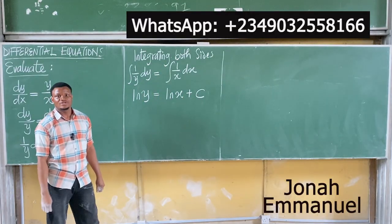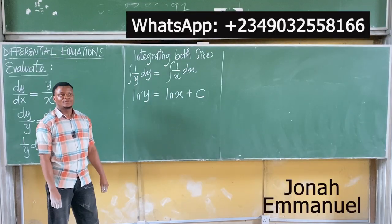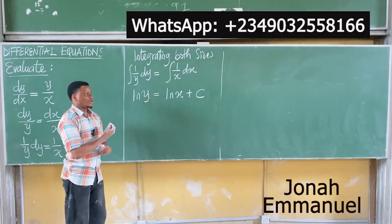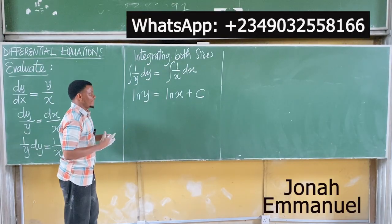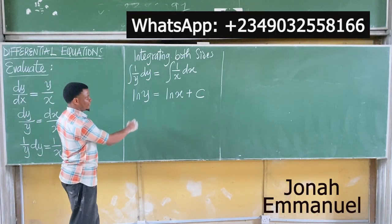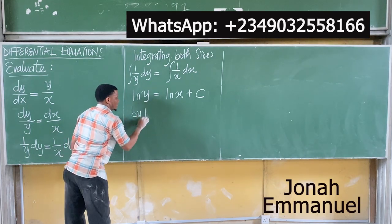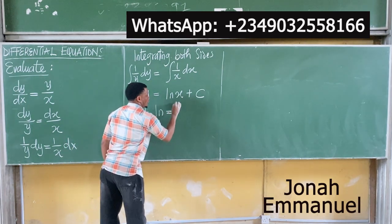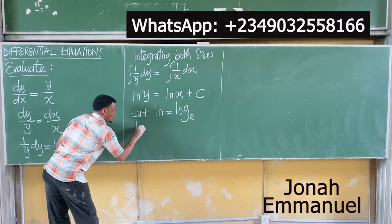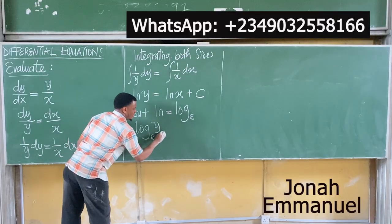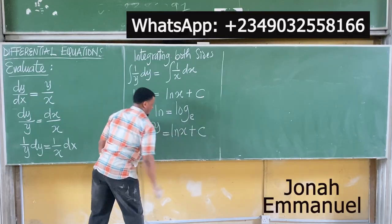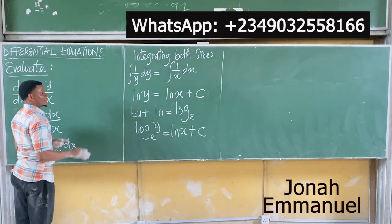To make y the subject of the formula, convert this back to logarithm form. We know that ln is equal to log to base e. So ln y becomes log base e of y, which is equal to ln x plus c. Now here is something about converting logs to indices.